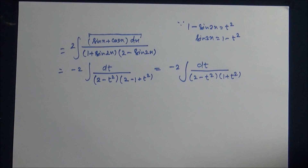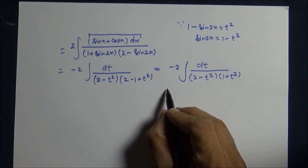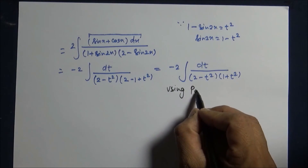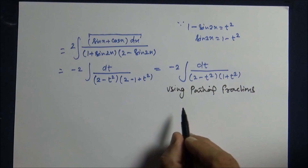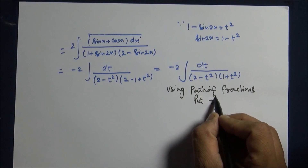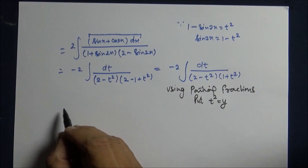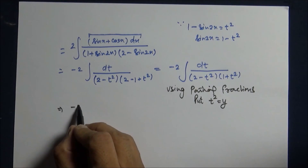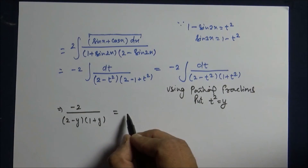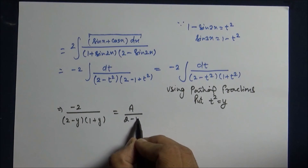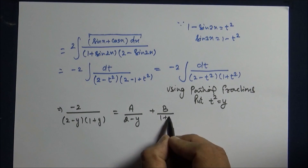Friends, this is the path where you can easily get the answer. And still if you're facing trouble, we'll go together. Using partial fractions and a temporary substitution, put t square equal to y. So the question turns to a upon 2 minus y plus b upon 1 plus y.